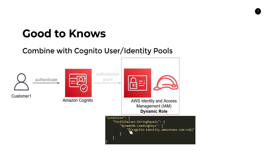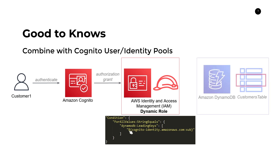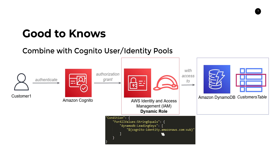If you have customer two, three, or four all logging in, this policy dynamically changes to reflect each particular customer's value. After the authorization grant is allowed, this gives each user very limited access to only a subset of records in the DynamoDB table. You can also use other social sign-on providers like Google or Facebook, or use attributes like email or phone number as the leading key — this is dynamic access control where you write the policy once and apply it to many different users.